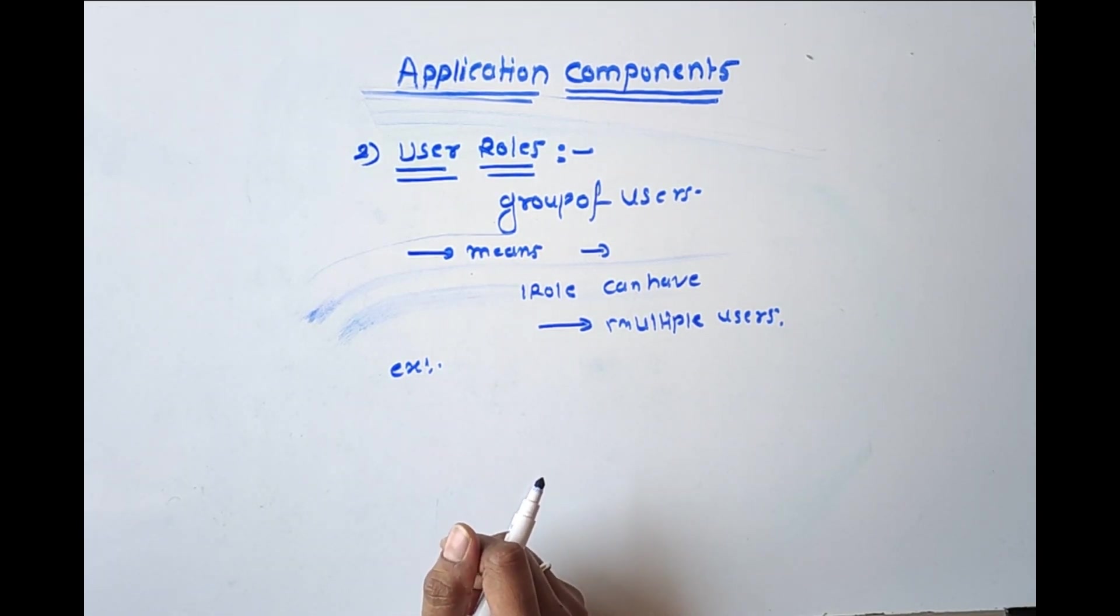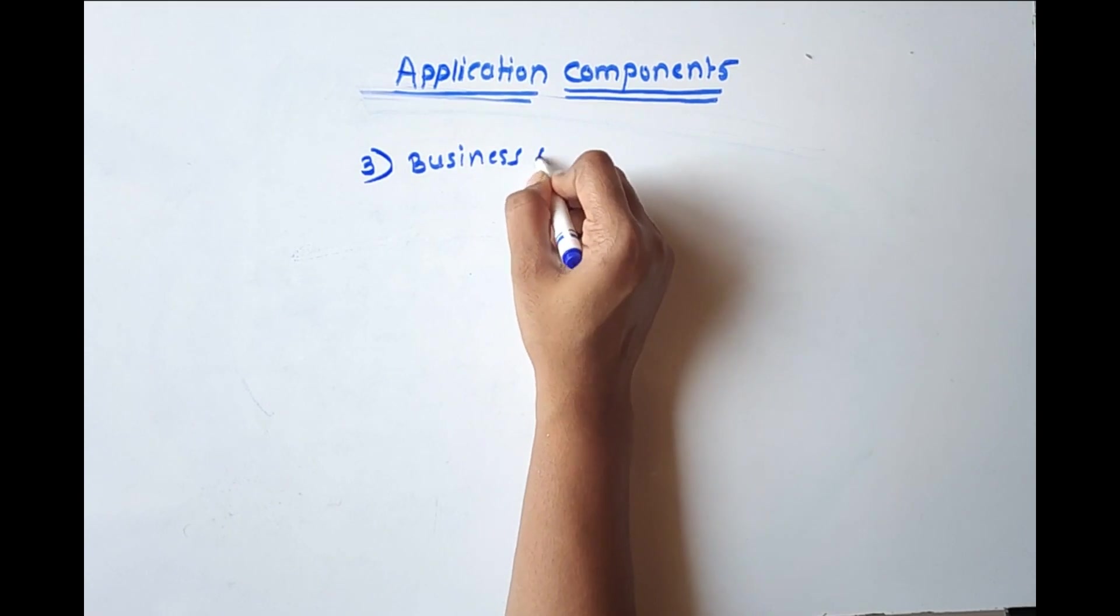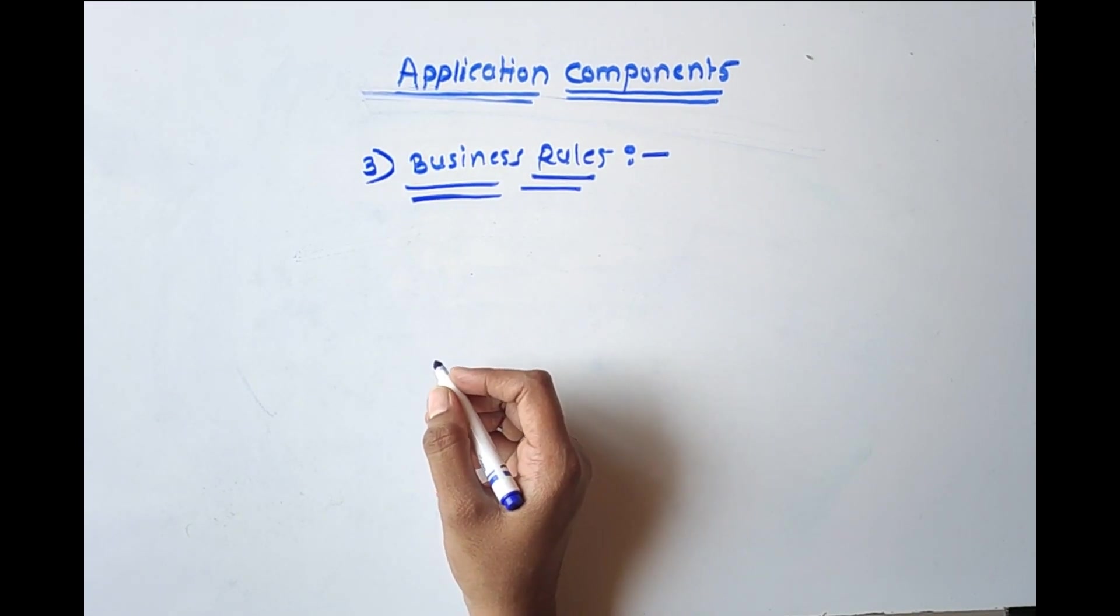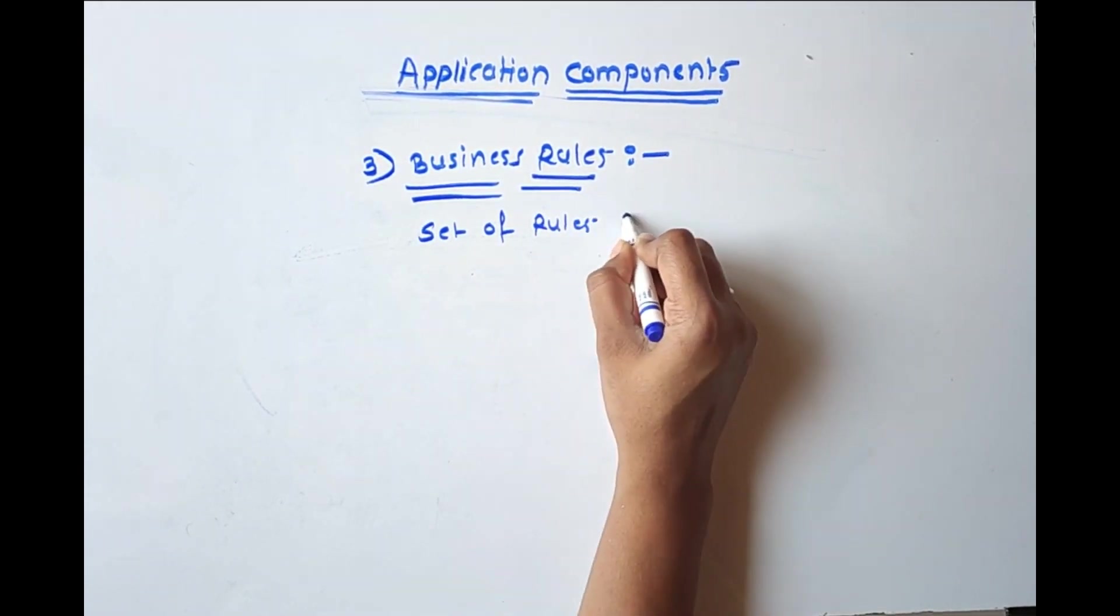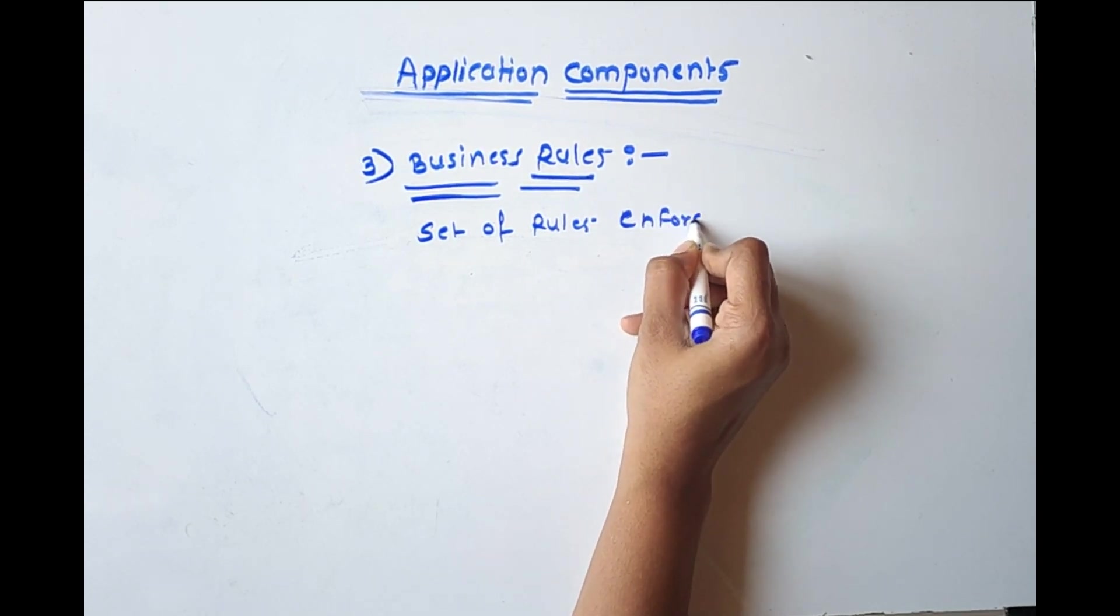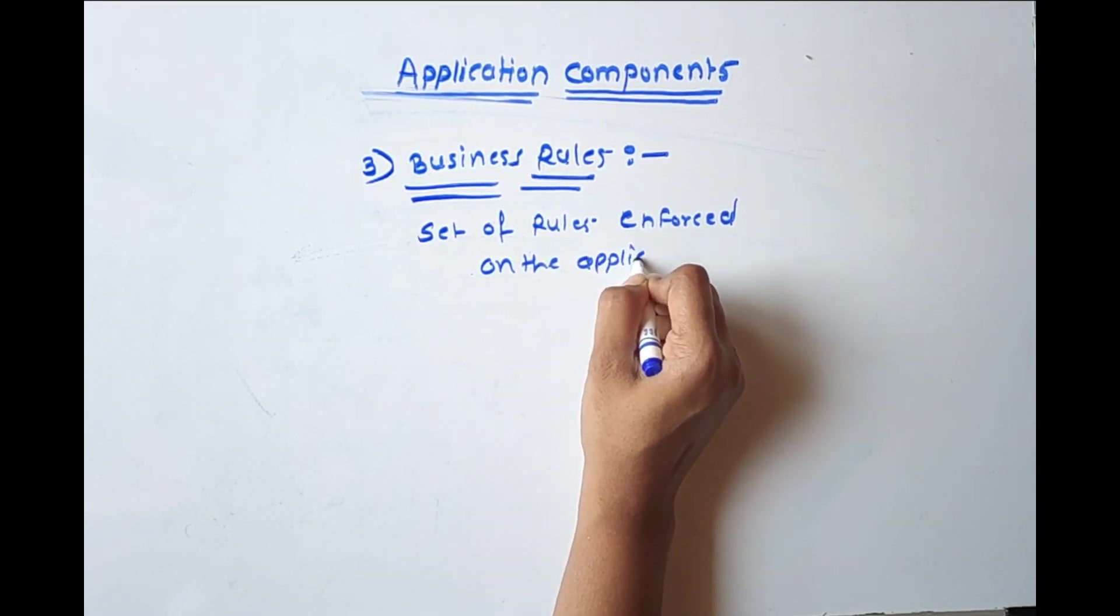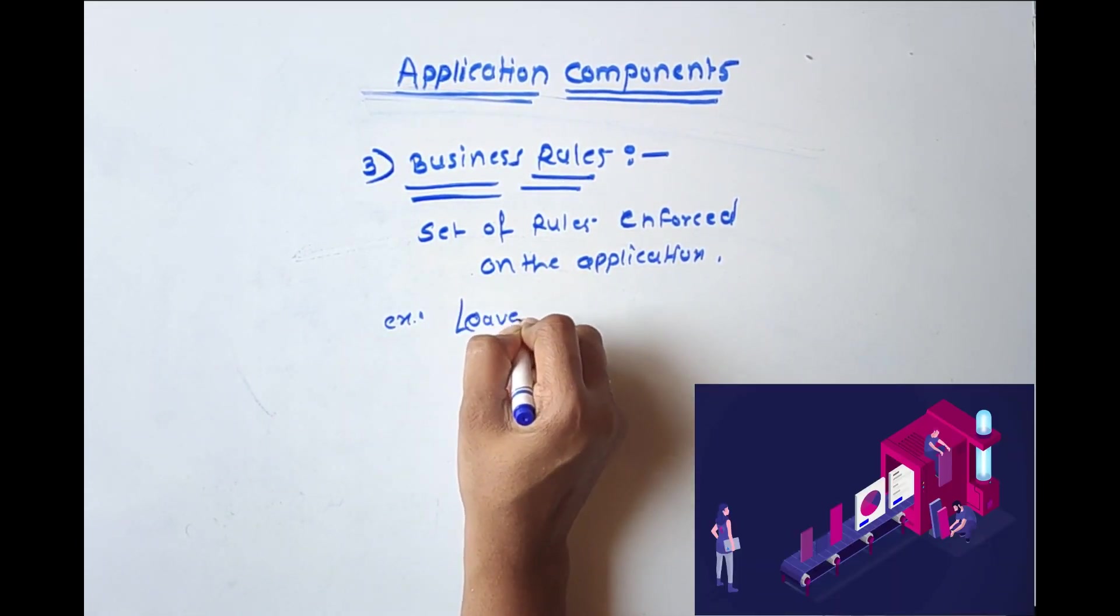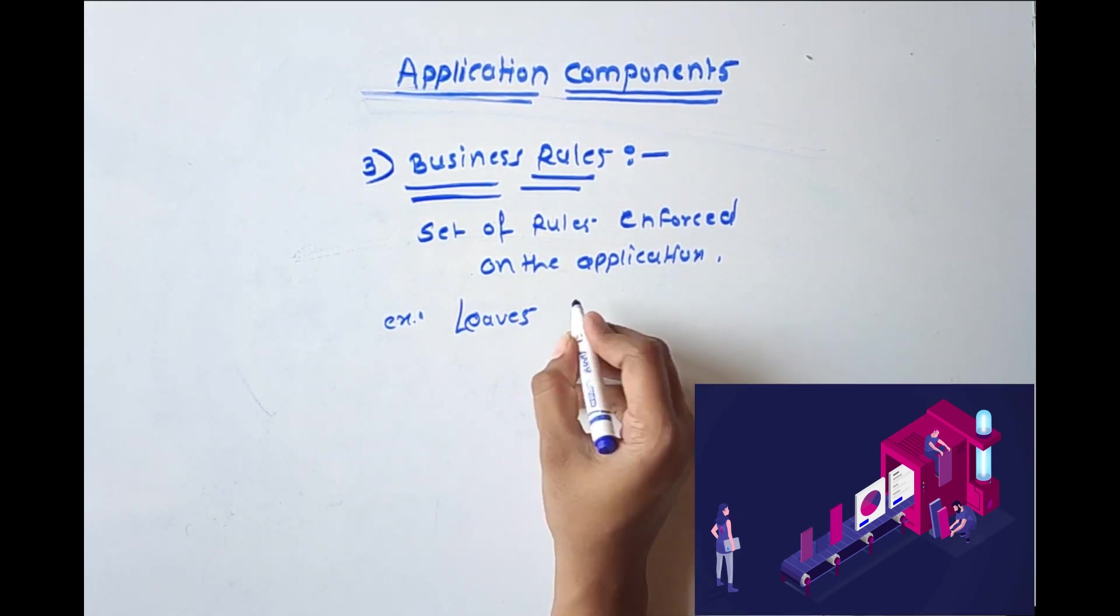Now third one is business rules. Business rules means a set of rules enforced on the application. For example, leaves is marked as sanctioned only when it is approved by manager.